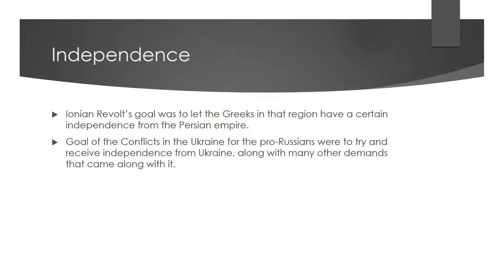The first similarity between the two conflicts is independence. With the Ionians, their goal was to get Persia to leave them alone and essentially gain independence from Persia. They were defeated in their attempts once the Persians took over Miletus, which was their central headquarters for the revolt. Similarly, the pro-Russians in Ukraine wanted independence from Ukraine and tried to take it by force, sparking many battles and events such as the War of Donbass and the First Battle of Mariupol.